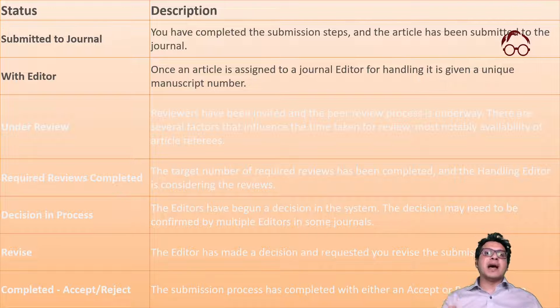As soon as the editor receives the review reports, you will see the status 'Required Reviews Completed,' meaning the target number of reviews has been reached. Most journals follow a threshold of two review reports per article, but some journals use three. For example, as a senior editor of the International Journal of Emerging Markets, we follow a threshold of three reviewers for each article.